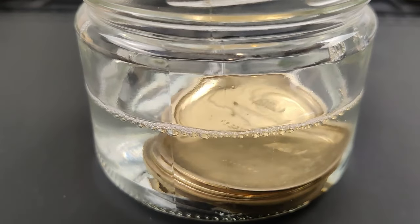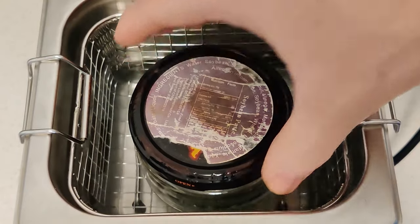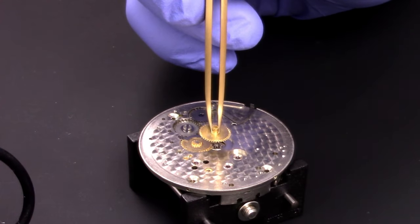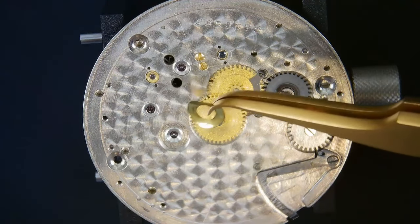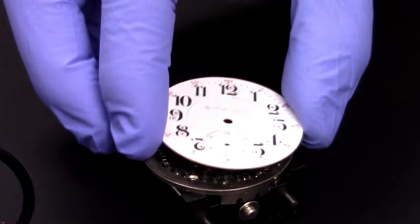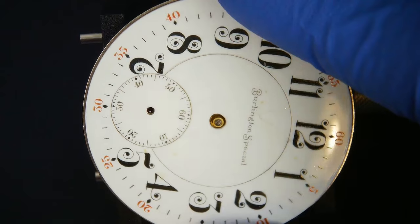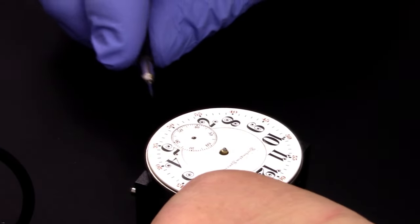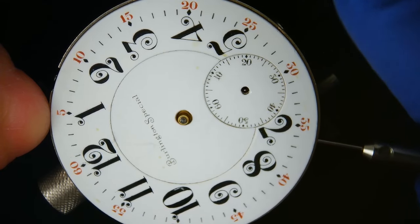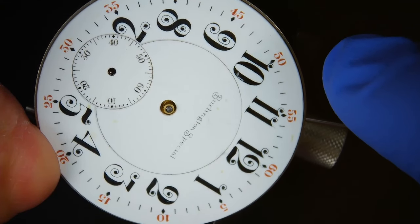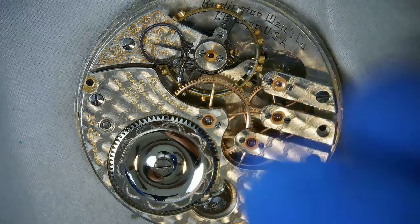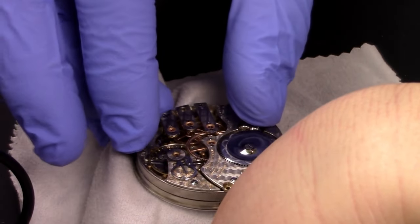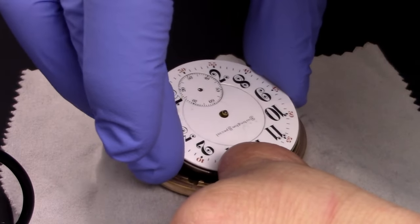I like cleaning cases in an ultrasonic bath of ammonia. I find that it really does a nice job. We're almost done. First, let's get the dial back on. So there are three dial feet screws which secure the dial to the movement. Now we can get the dust ring back on. And now let's case this thing.